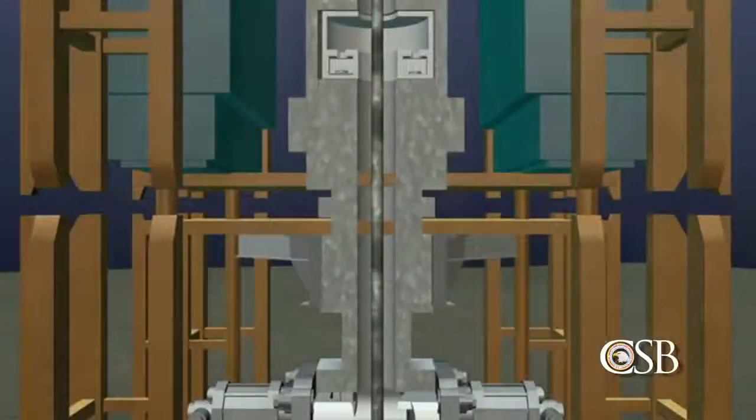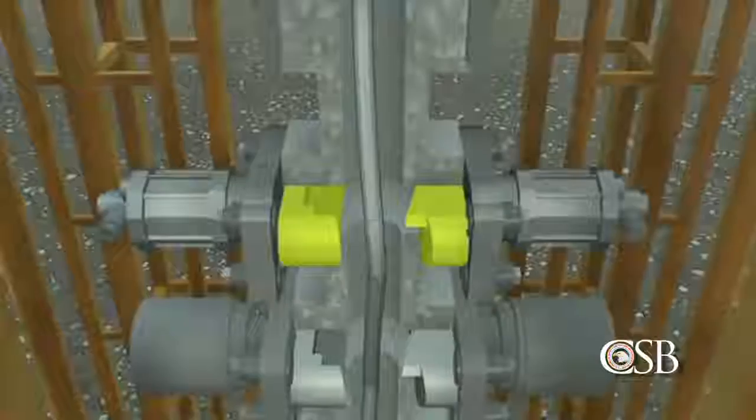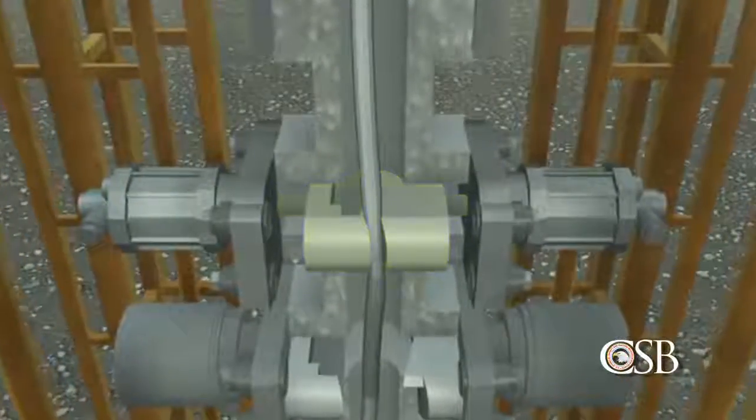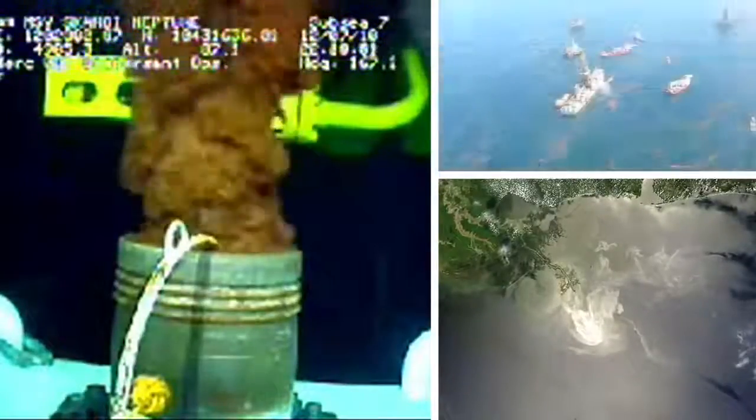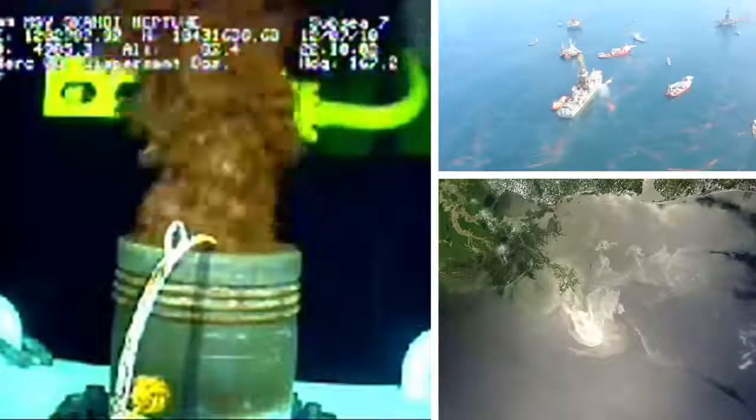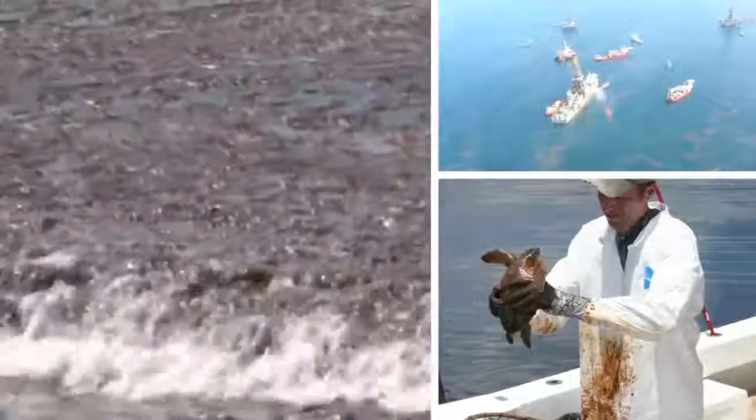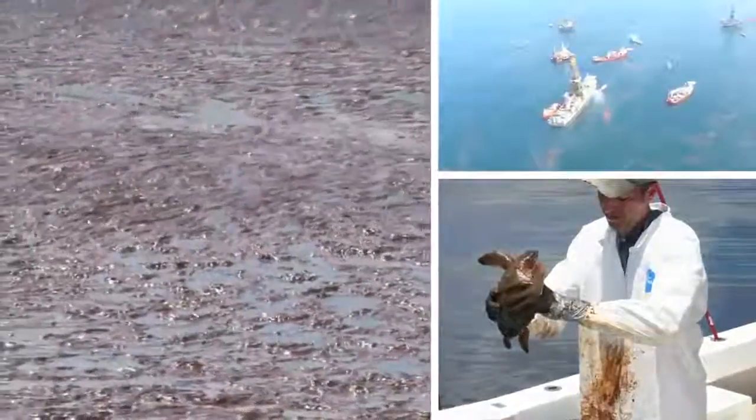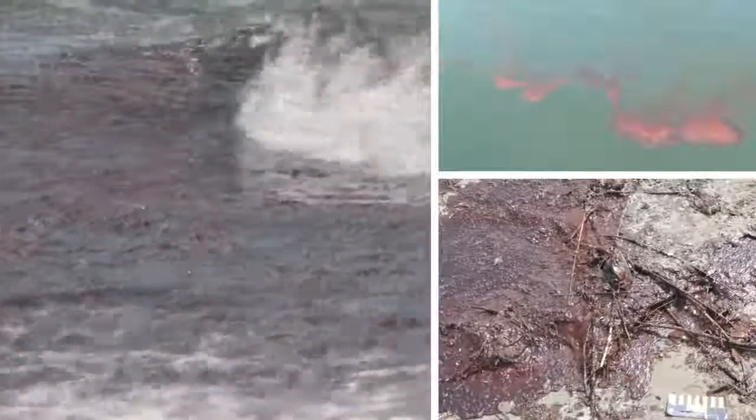In the case of the Deepwater Horizon accident, the buckled drill pipe prevented the blind shear ram from sealing the well. Oil and gas from the well flowed out of the buckled drill pipe and into the Gulf of Mexico for eighty-seven days. A reported five million barrels of oil eventually spilled, causing one of the worst environmental disasters in United States history.